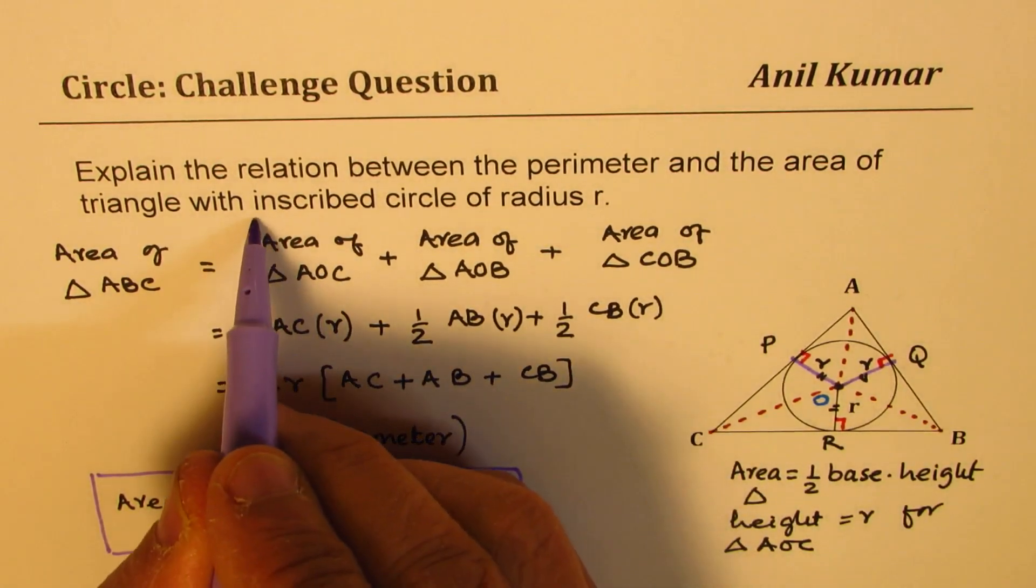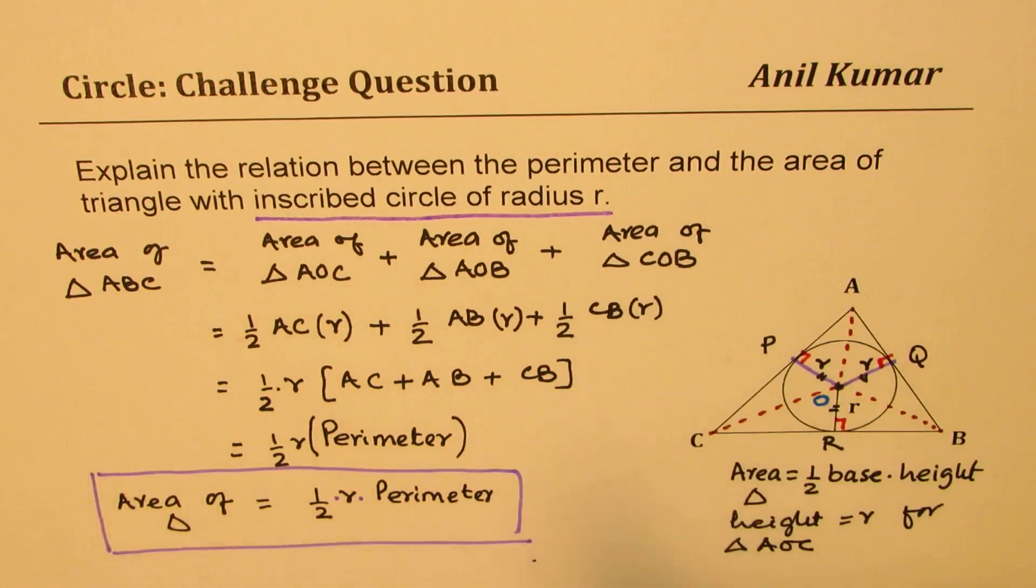So knowing this particular formula helps us to solve many questions related to area and perimeter when we are given circles inscribed in a triangle. So I hope that makes sense.